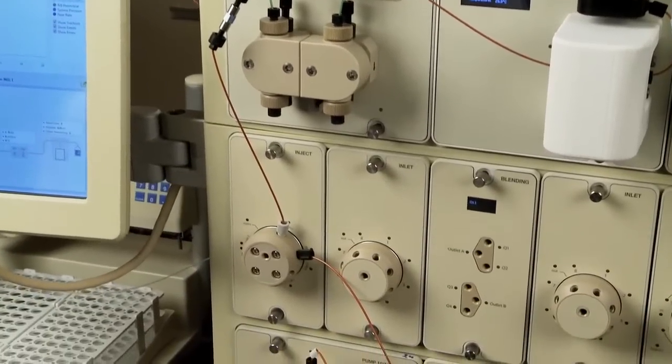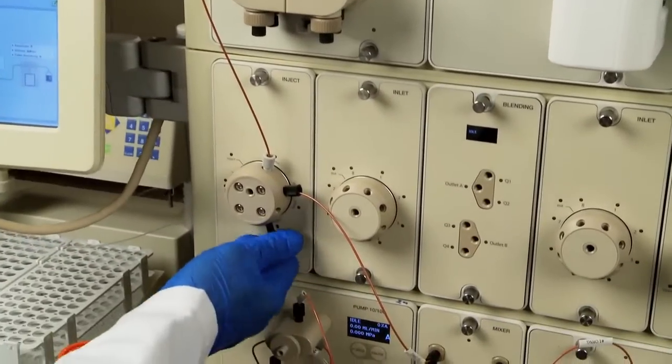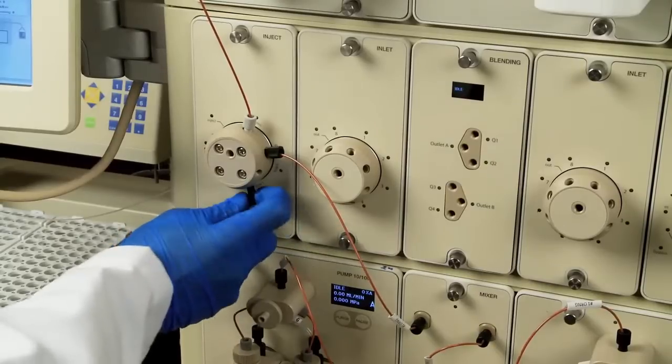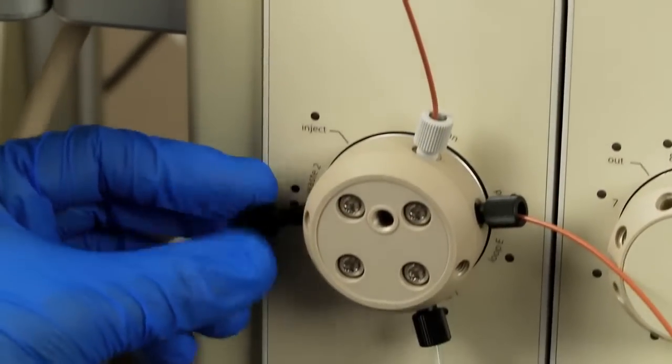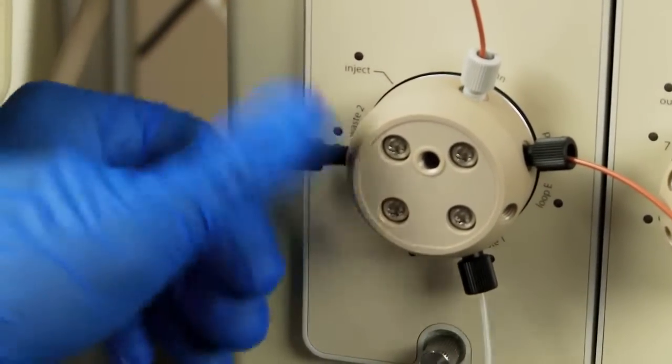Now you will make tubing connections to the inject valve. Connect the waste lines to waste ports 1 and 2 on the inject valve and place the ends into the waste container.